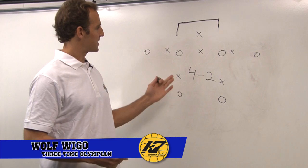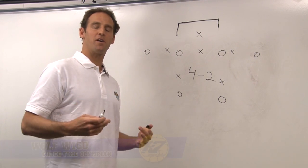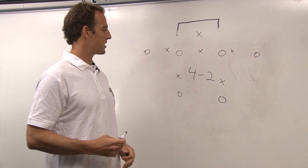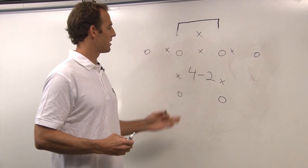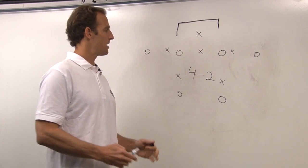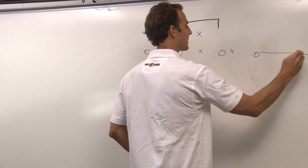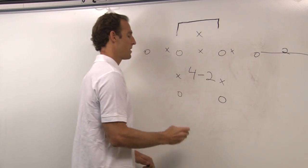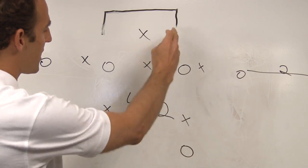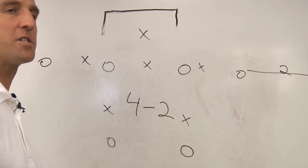Here we are on the 6 on 5, working on the offense, and we have two real systems that you can go with. You can go with a 4-2, which is where we have four players on the 2-meter line, or close to the 2-meter line, and then we have our two players up top on each post, 5 or 6 meters out.